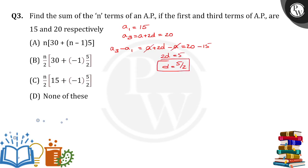Right, so when d is equal to 5 by 2, we got a is equal to 15. So what we have to find is the sum of n terms of an AP.